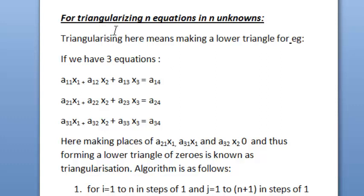First we see triangularizing N equations in N unknowns. Here, triangularizing means making a lower triangle. For example, if we have three equations like this, in which we have three unknowns, X1, X2 and X3 and here these three are constants. Here, in places of A21x1, A31x1 and A32x2, we have to make zero for making a lower triangle. This is known as triangularization.